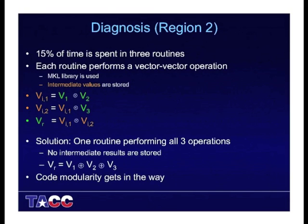Let's go to region number two, where 15% of time was spent in three routines. Each routine performed a vector-vector operation with the help of some MKL libraries, and intermediate results were stored. In my example, there are two input vectors V1 and V2, from which you calculate intermediate vector one. Then with a third vector V3, you calculate intermediate vector two, and from the two intermediate vectors you calculate the result. That was all done in a modular fashion — each operation in one subroutine. The solution was to do one routine performing all three operations, getting the result from V1, V2, and V3 by slightly changing what these operations did. This was a case where code modularity got in the way.